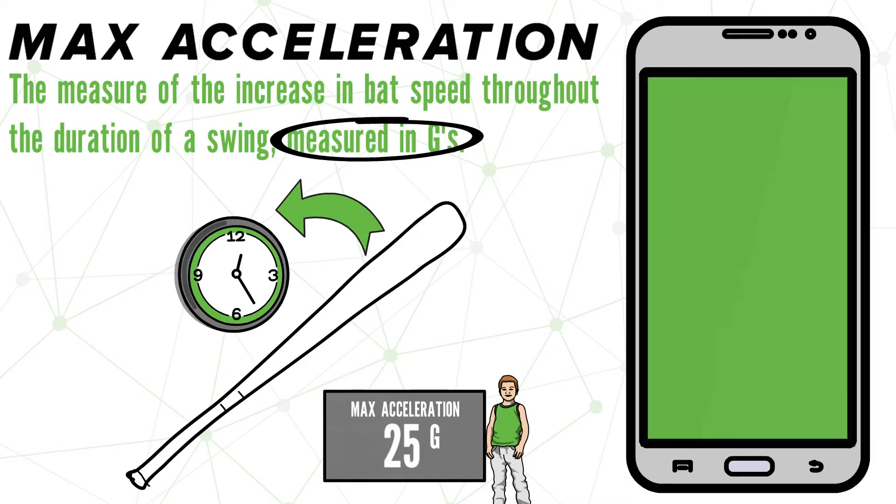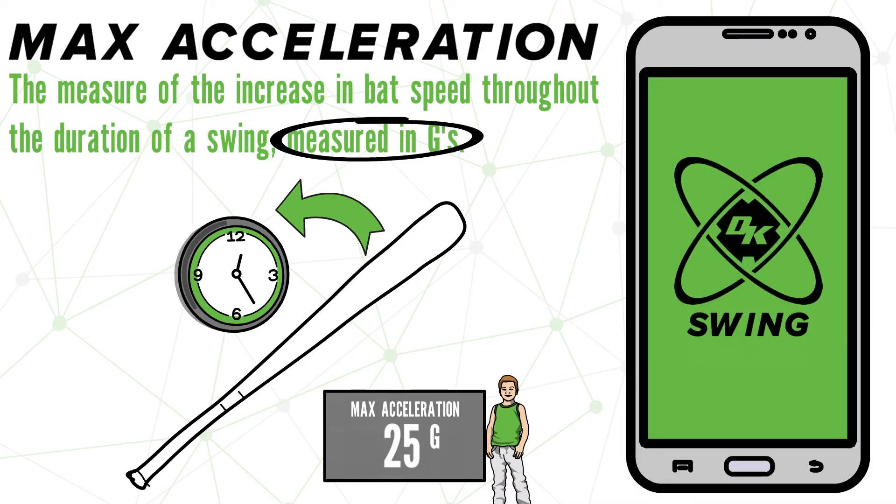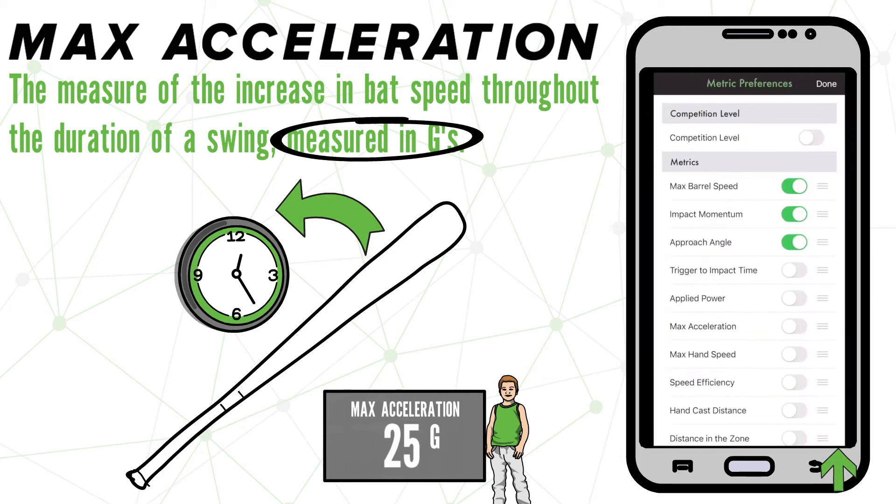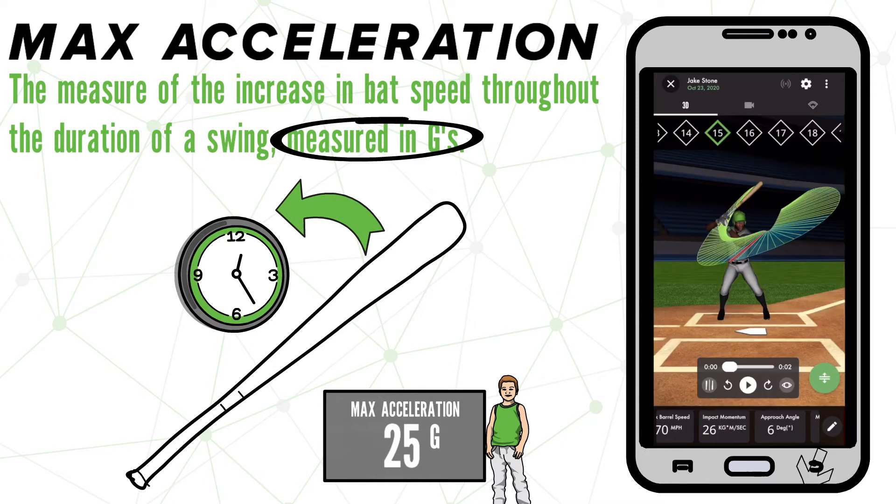Now, where can we find this in the DK Swing Tracker app? Well, if you're just opening the app for the first time, you may need to hit this pencil right here to enable it across your metrics bar. Once that is done, scroll to the right and you'll find it right here.